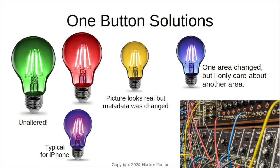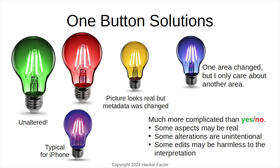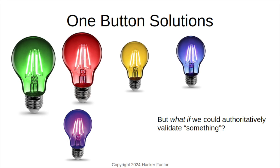Many digital cameras automatically enhance photos. Maybe the picture was a little altered but still represents the contents. Maybe the picture is real but the metadata was changed. Or maybe one area in the picture was altered but you only care about another area. This problem is much more complicated than a simple yes-no reply. Some aspects may be real, some alterations may be unintentional, and some edits may be harmless. But what if we could authoritatively validate something?